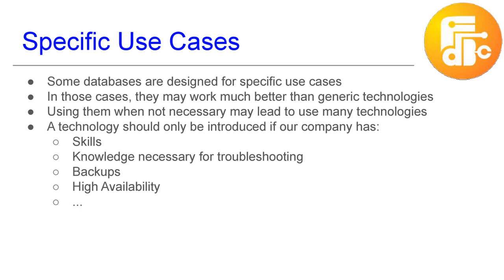Cassandra is designed to store data in a sort of key-value model, but allowing GROUP BY and ORDER BY, and it's designed to write very fast. But at the same time, it is not extendable. In Cassandra, you define a table keeping in mind how it will be used — how you filter data, how you will order data. And if you want to run a completely different query with a different filter and order on the same data, you will probably have to create another table with another primary key on the same data.